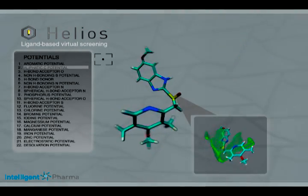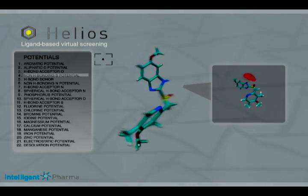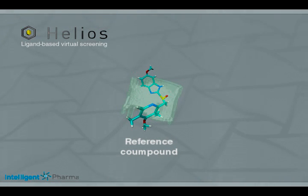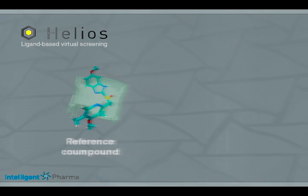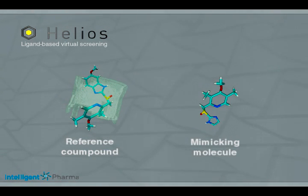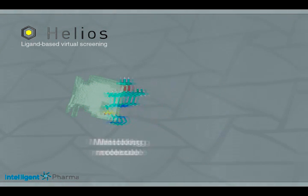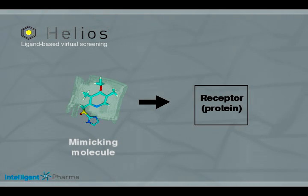Each potential is represented by a three-dimensional molecular potential map. The working hypothesis of Helios is: if two compounds are able to generate a similar set of molecular potentials, these two compounds will feature the same biological activity. This can be understood by considering the interaction of a small molecule with the target receptor. If two small compounds with similar molecular fields approach a target protein, the protein will be affected in the same manner and therefore bind to each one of the compounds, even if both molecules are structurally very different.